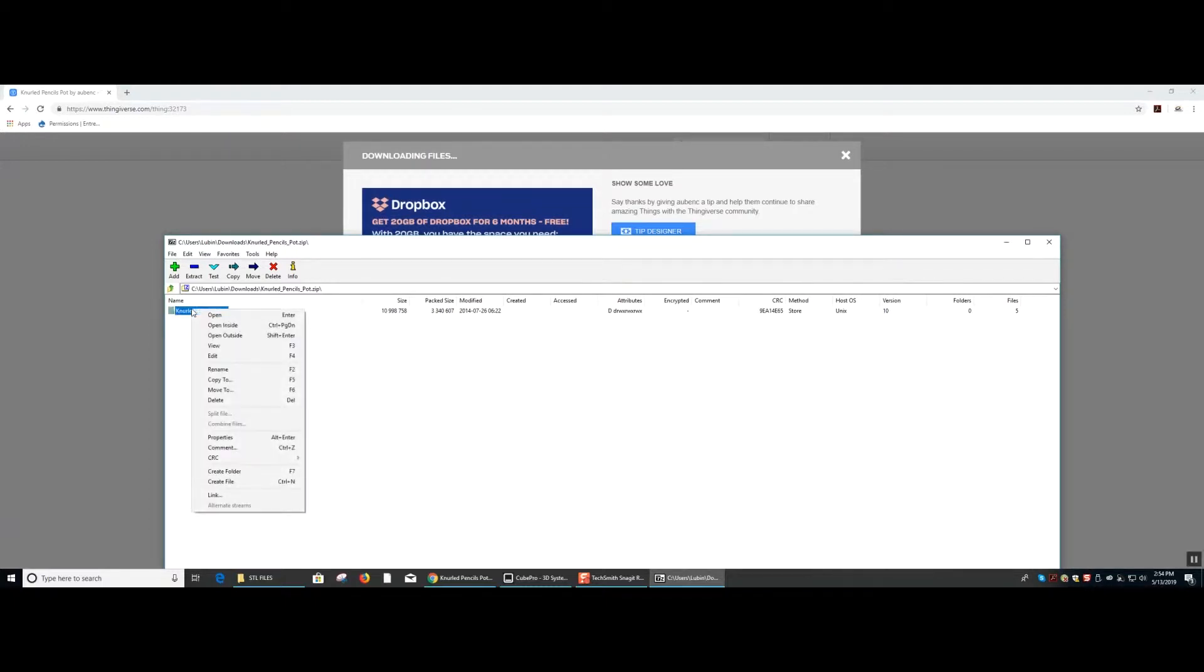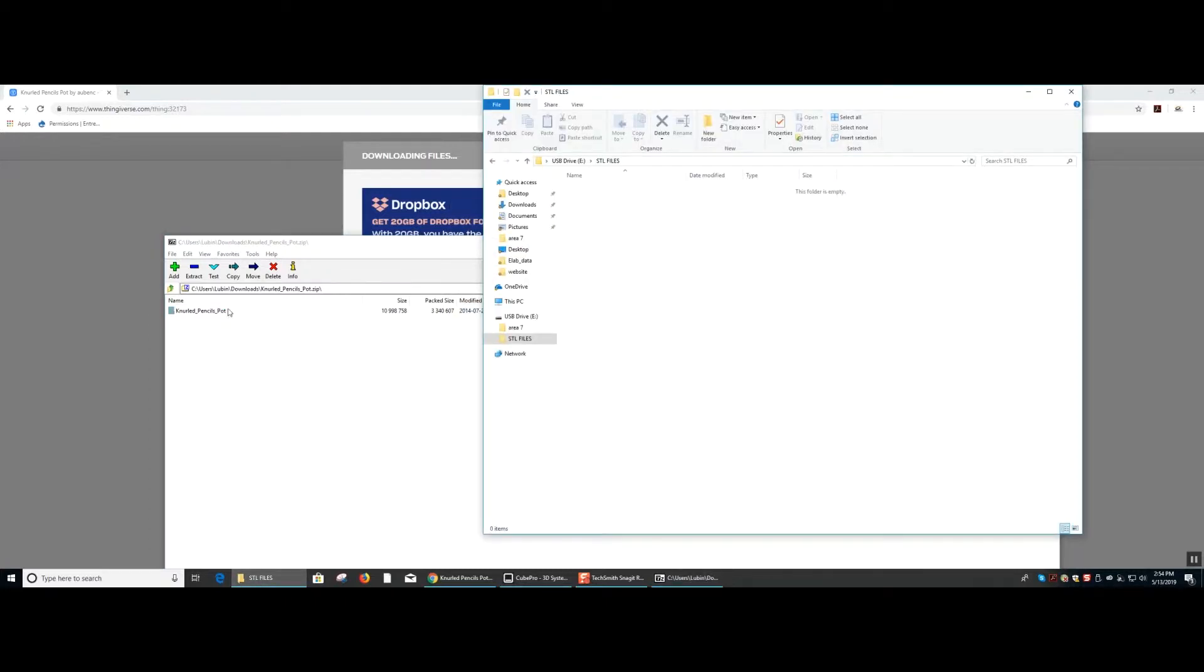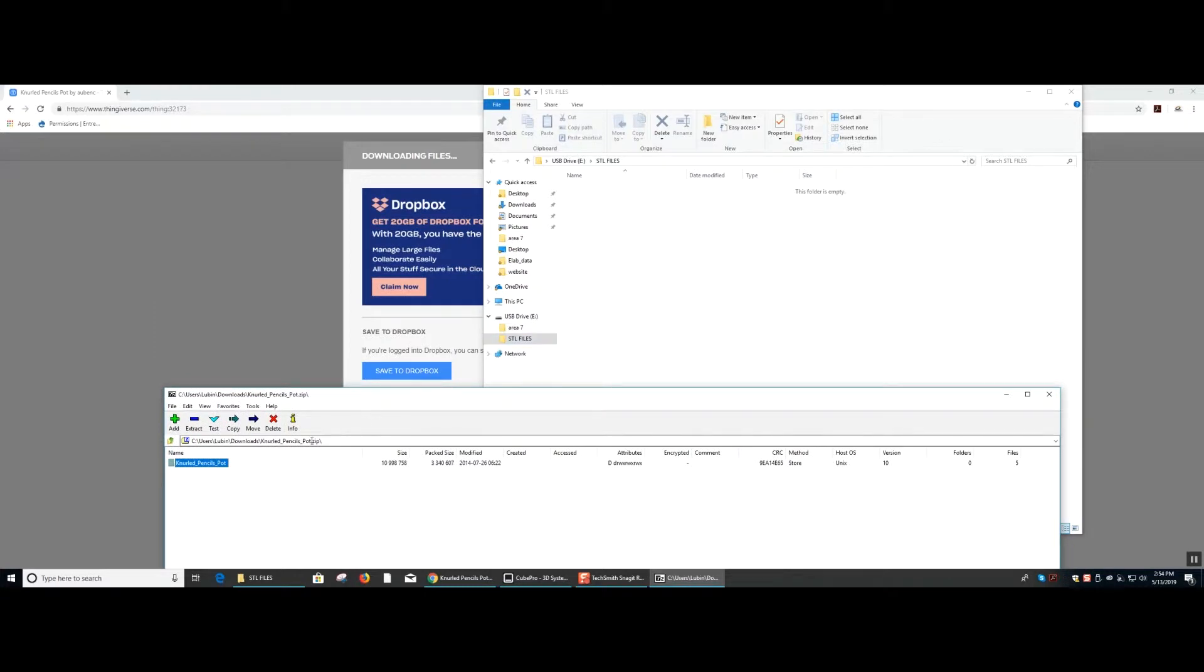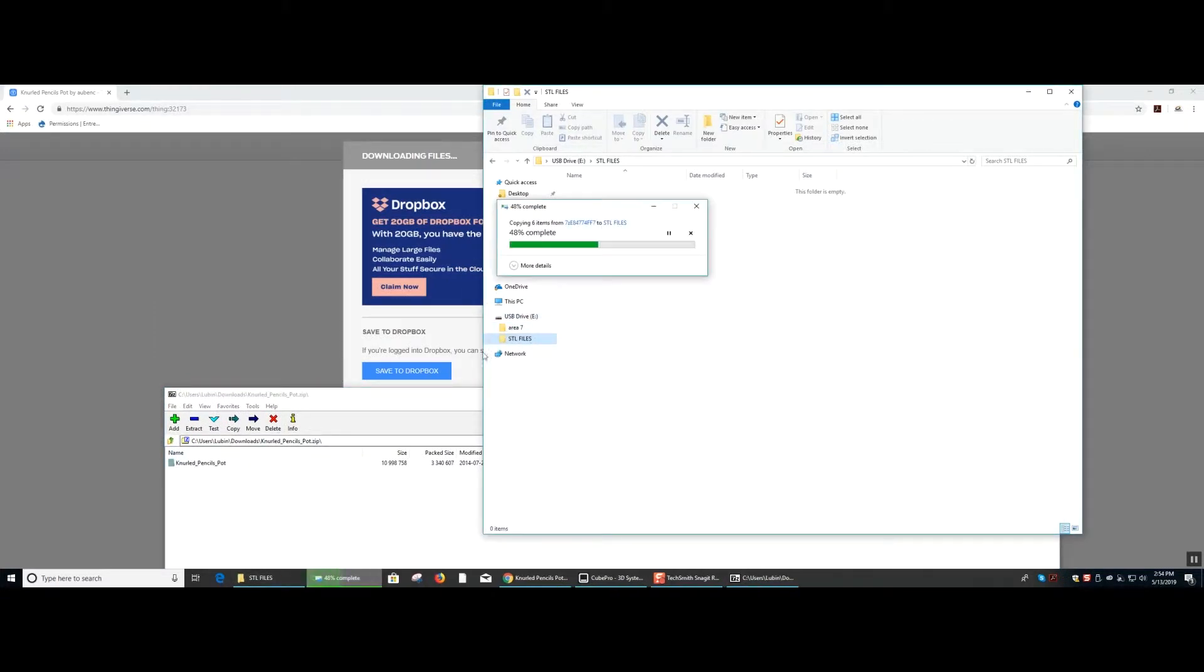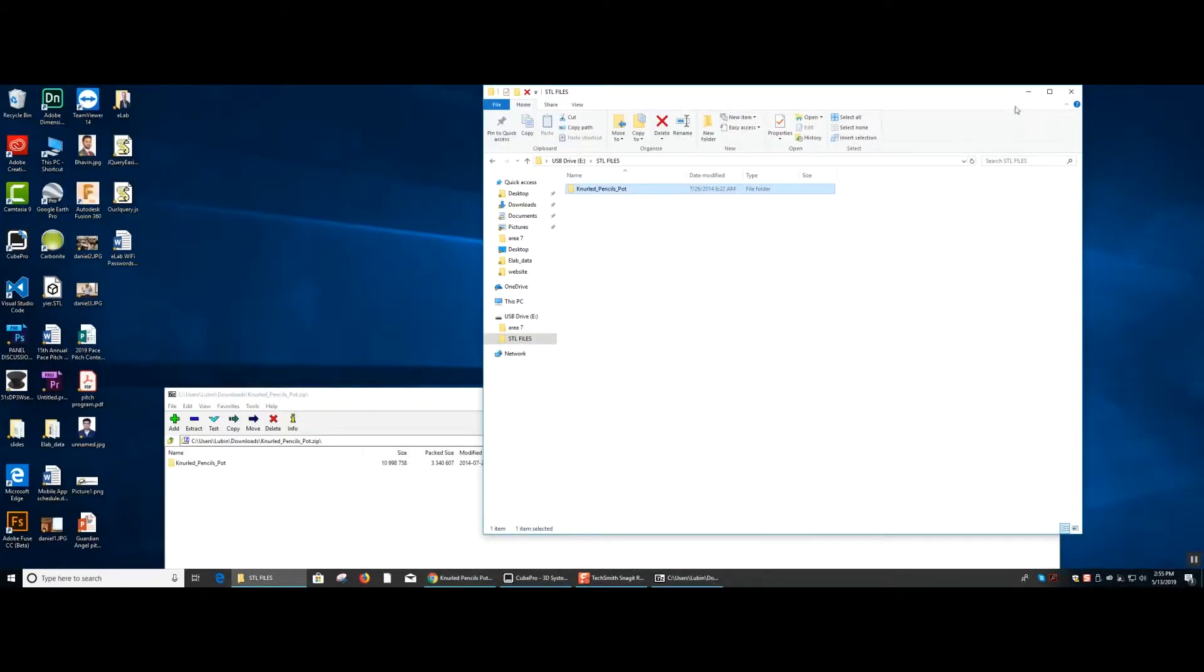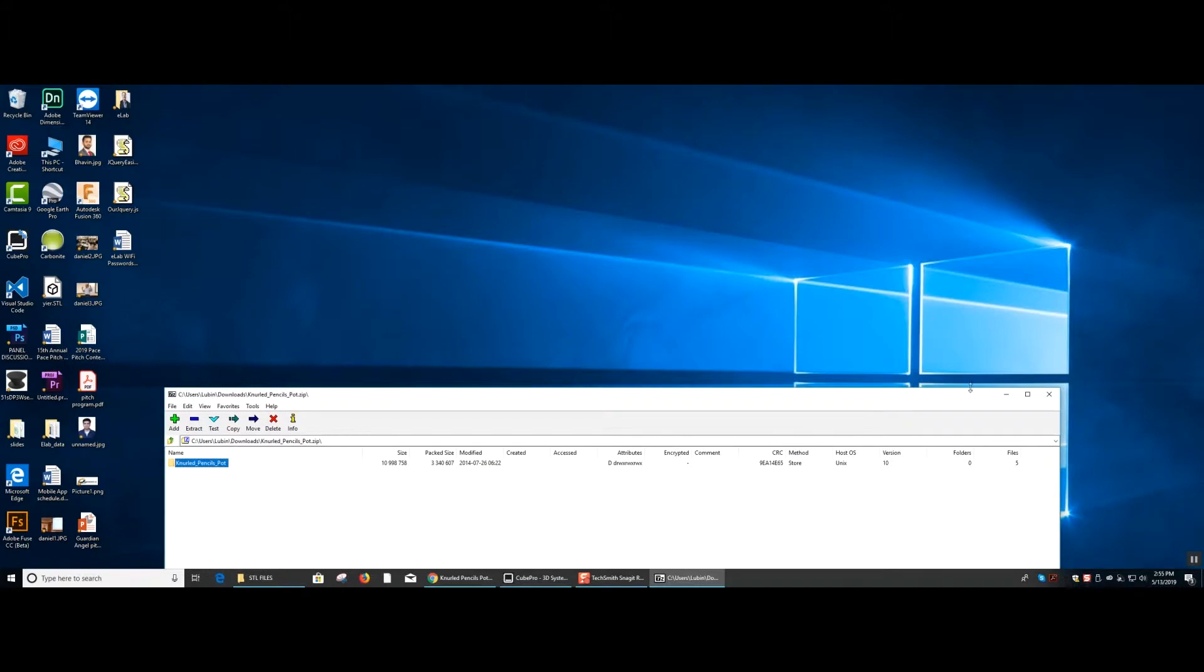The best way to obtain your STL file is to save it into a USB flash drive. Once your downloaded STL file from the internet is saved into your USB drive, you are then able to transport that file into the Cube Pro software.